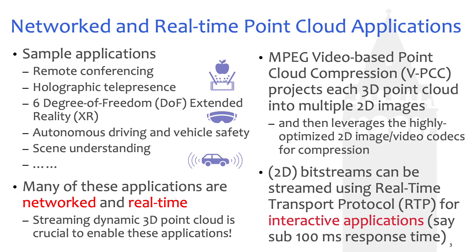The standardization group — for example, MPEG — has also observed this, and they have defined a couple of point cloud compression algorithms, including video-based point cloud compression, or VPCC. VPCC projects each of the 3D point cloud sequences into multiple 2D video sequences, and then uses the highly optimized 2D codec to compress all these 2D video sequences. The resulting bitstream can therefore be streamed using existing streaming protocols, for example, real-time transport protocol or RTP for interactive applications.